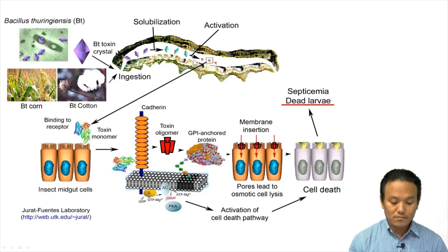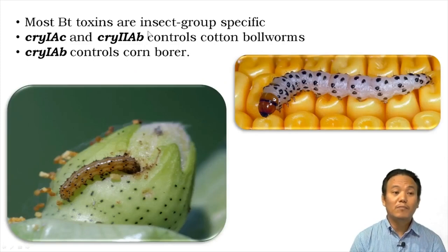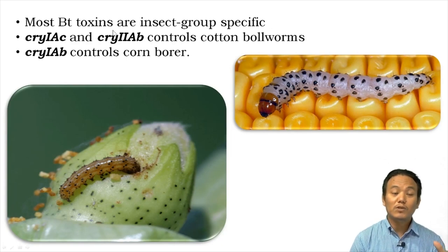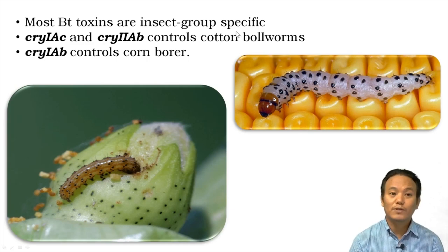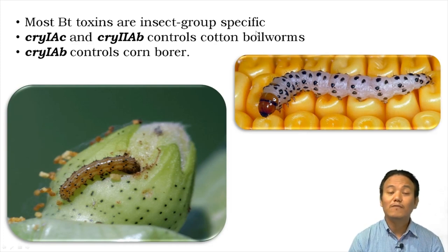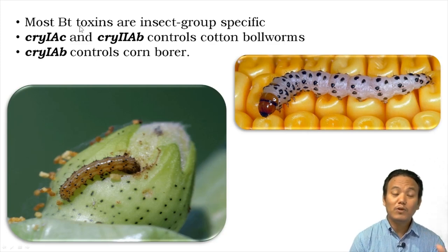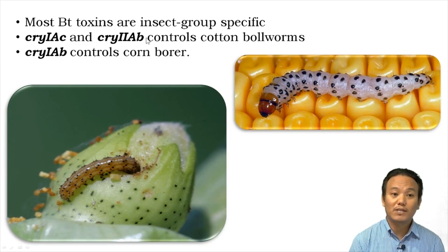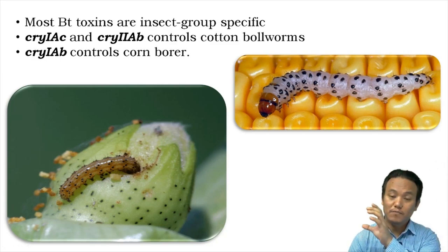It is important to remember that most Bt toxins are insect-group specific. Some Bt toxins kill only Lepidopterans — butterflies and moths. Some kill only Coleopterans — beetles. And some kill only Dipterans — flies and mosquitoes. By keeping this important property in mind, scientists have isolated different Bt toxin genes from bacteria and inserted them into host plants, making the host plant specifically resistant to specific insect pests.